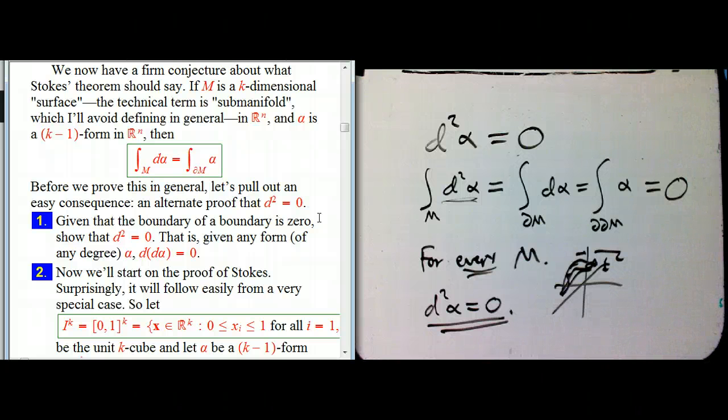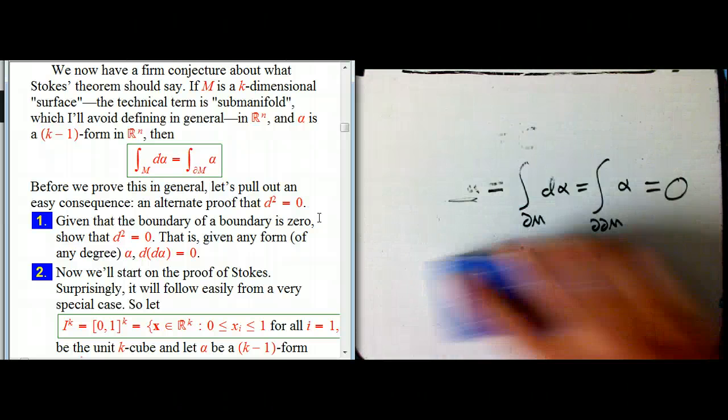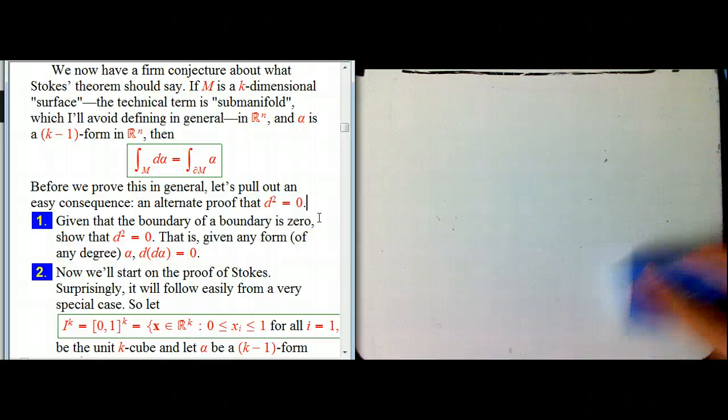Again, you can make that into a more detailed argument, but that's really the idea. So that's probably the last proof I'm going to give you of d squared equals zero, but it's one of the best.